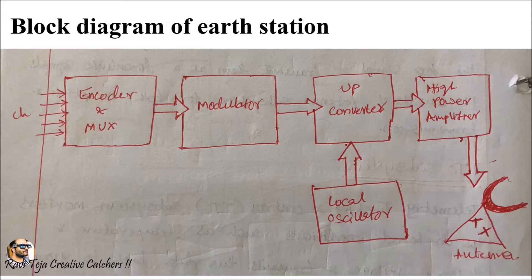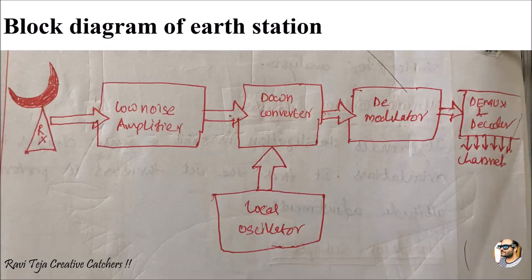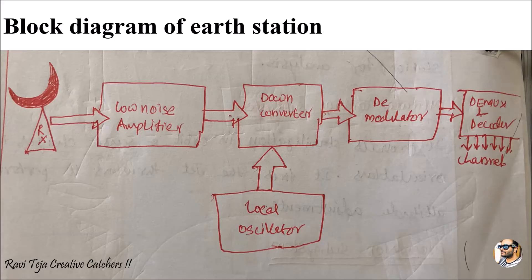Now let's see the receiver section. Whenever an Earth Station tries to receive a signal from the satellite, this is the setup required. A receiver antenna is connected to a low noise amplifier, because the signal is coming from a far away distance from the satellite. The incoming signal is amplified, then down converted — with a local oscillator also present at the down converter. This converted signal is then demodulated to separate the original data from the signal. The signal is then demuxed or decoded and sent to the channels, which carry the data to various applications or points.